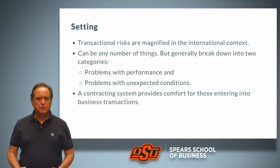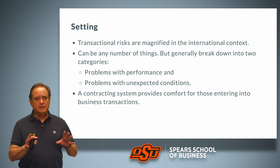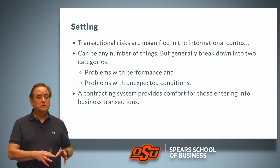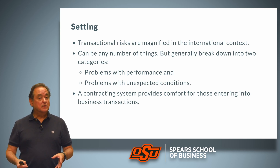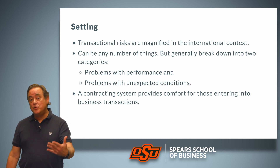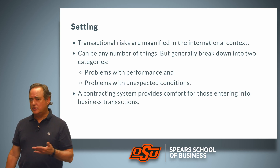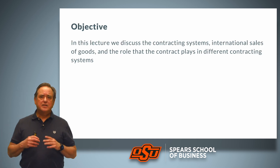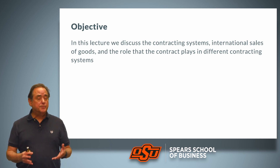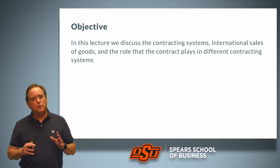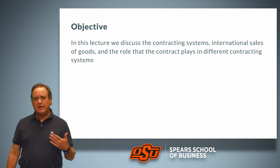When you go to the grocery store and buy some chips, you don't have to particularly trust that grocery store. Instead, you know that if there is a dispute arising out of that bag of chips, there is a contracting system that's going to govern your purchase and give you comfort — a means of addressing that dispute if the chips are bad or make you sick. In this lecture we're going to talk about contracting systems, international sale of goods, and the role that the contract plays in these different contracting systems.